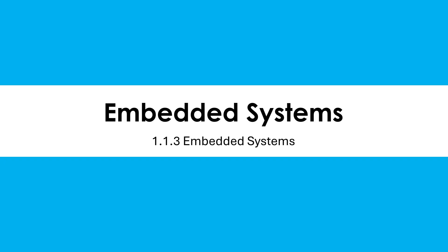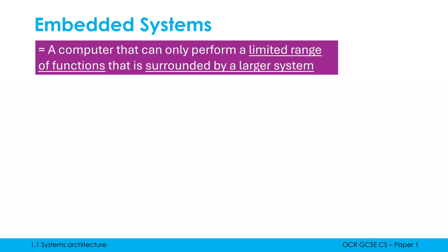Let's have a look at what embedded systems are and go through their common characteristics. An embedded system is a computer that can only perform a limited range of functions that is surrounded by a larger system. There are two key parts of this definition that we need to include if we're given definitions.